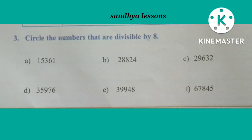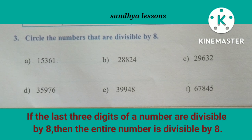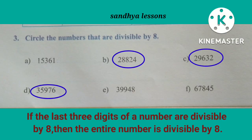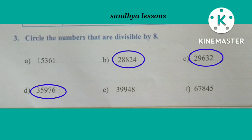Third Roman: Circle the numbers that are divisible by 8. Divisibility rule of 8 is: if the last three digits of a number are divisible by 8, then the entire number is divisible by 8. The numbers which are divisible by 8 are 28,824; 29,632; and 35,976.